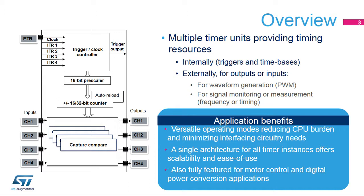The timer features multiple clocking options. The clock and trigger controller, also responsible for timer chaining, handles the clock for the counter. The default clock comes from the reset and clock controller, linked to one of the APB clock domains. The various timers are shared on the two APB domains to implement low power schemes, typically one high-speed APB and one low-speed APB, to limit the current drawn by the peripherals including the timers.